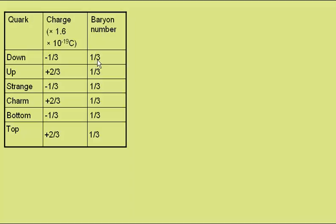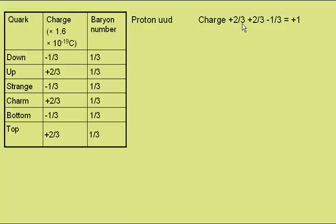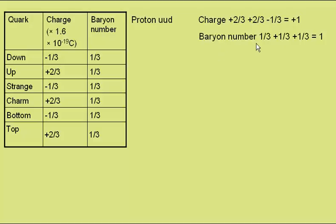Just to look at a few examples of baryons. First, the proton, which consists of two up and one down quark. The charge will be plus two thirds for the first up quark, plus two thirds for the second up quark, minus a third for the down quark, giving a total charge as expected for the proton of plus one. Baryon number is simply one third plus one third plus one third, giving a baryon number of one.